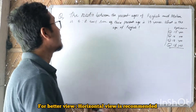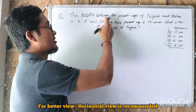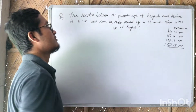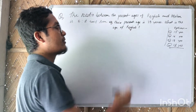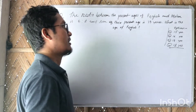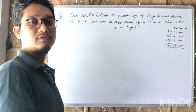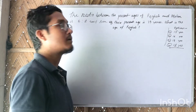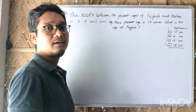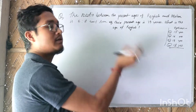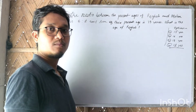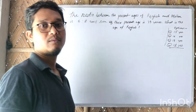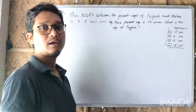First question: the ratio of the present ages of Raghav and Mohan is 6 to 7. The sum of their present ages is 39. What is the age of Raghav?